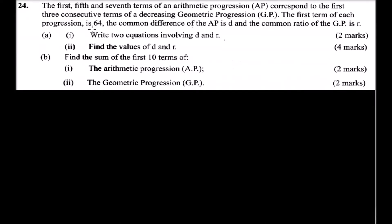Question number 24. We are told the first, fifth and seventh terms of an arithmetic progression correspond to the first three consecutive terms of a decreasing geometric progression. The first term of each progression is 64, the common difference of the AP is d, and the common ratio of the GP is r. Roman numeral one: write two equations involving d and r.